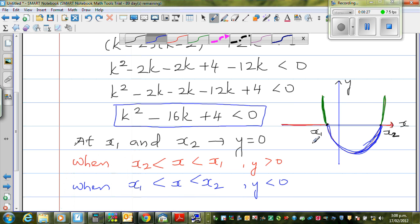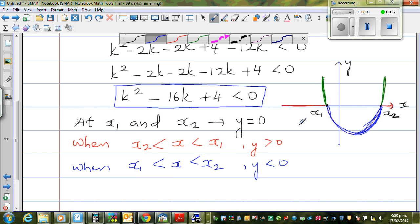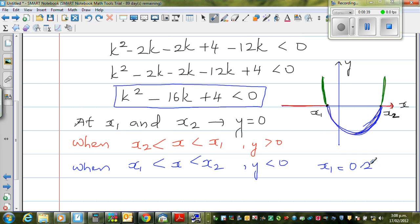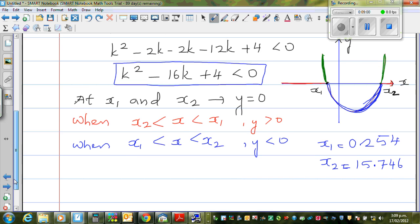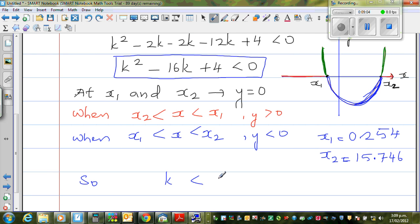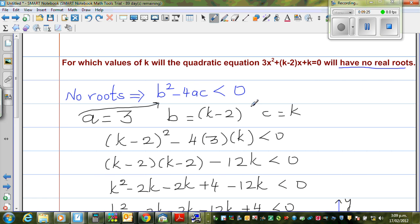So here, x1 in this case for this parabola that we drew was 0.254, and your x2 is 15.746. So when k is less than 15.746 and greater than 0.254, you will have no real roots.